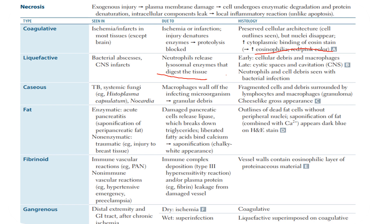Caseous necrosis is seen in TB, systemic fungi such as Histoplasma capsulatum, Nocardia, and also syphilis. Syphilis is caused by the bacterium Treponema pallidum. Macrophages wall off the infecting microorganism and form granulomatous debris. Histologically, we see fragmented cells and debris surrounded by lymphocytes and macrophages — which we call a granuloma — and a cheese-like gross appearance.